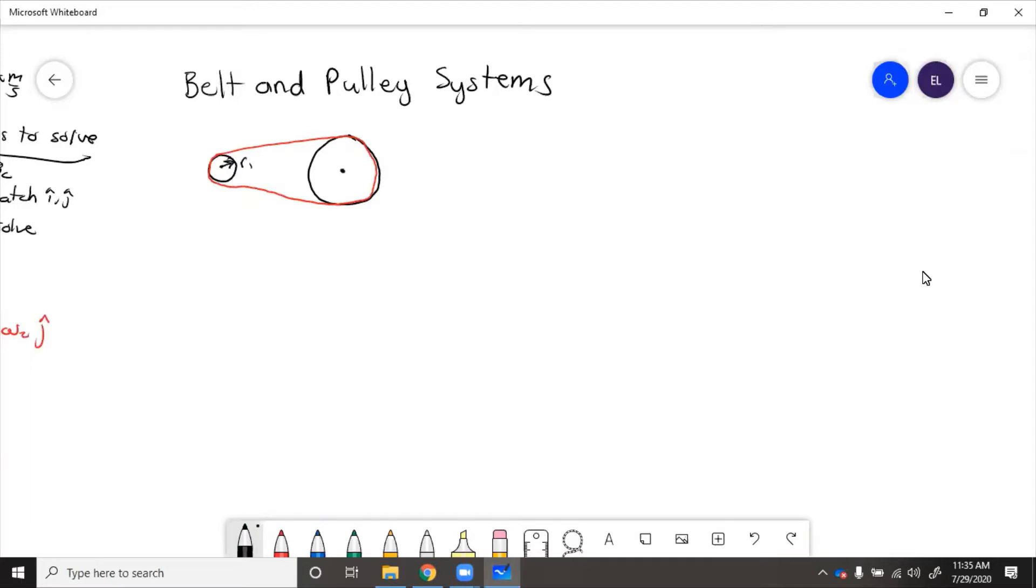So we'll have an input and an output, and because they're connected by this belt, we know that the belt speed has to be the same, VB. So the belt speed is moving this way or moving that way. We know that VB is the same for both. So R1 omega 1 equals R2 omega 2, but no sign change. So then omega 2 equals R1 over R2 omega 1.